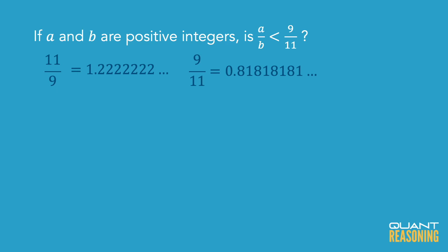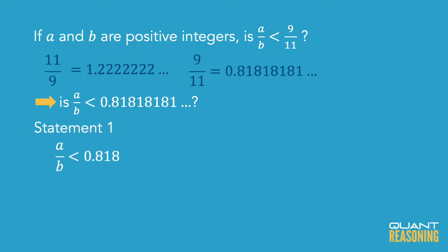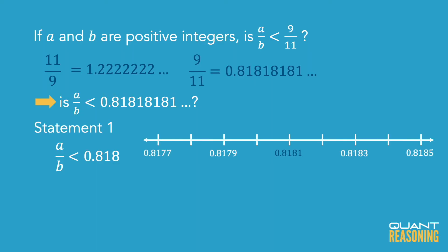Let's rephrase this question. What this question is really asking is: is the ratio A over B less than 0.818181...? Statement 1 tells us that the ratio in question is less than 0.818. If something is less than 0.818, then it's definitely less than something bigger than 0.818 — namely 0.818181.... If you draw a number line, you can confidently place 0.818 a little bit to the left of 0.818181.... So statement 1 is sufficient on its own, and we can eliminate B, C, and E. We're down to A or D.